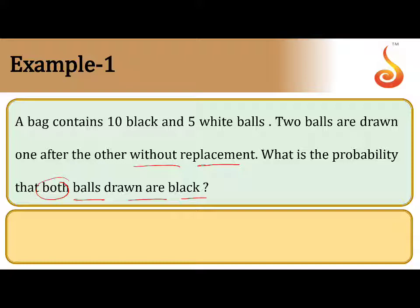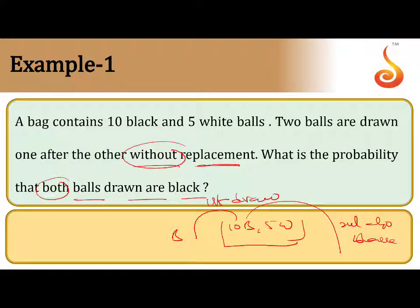First ball is black and second also black. So box contains 10 black and 5 white balls. First draw black ball, second draw also black without replacement of first. Without replacement of the first ball.